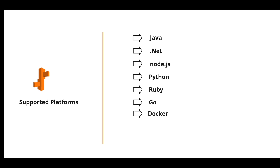What platforms does it support? The supported application platforms are Java, .NET, Node.js, Python, Ruby, Go, and Docker. If you're not using any of these programming languages but still want to use the Elastic Beanstalk service, you can configure your Docker container with whatever framework you want to leverage, and you could still find a way to support it on Beanstalk — though that comes with a little extra work.